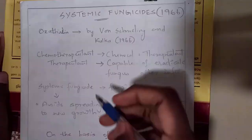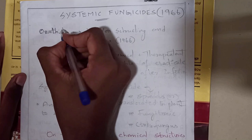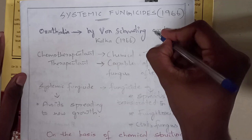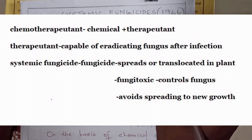The first systematic fungicide was discovered in the year 1966. The fungicide is oxethylene, discovered by Skimling and Kulka. Chemotherapeutant refers to the chemical means of eradicating fungus after the infection of the host.